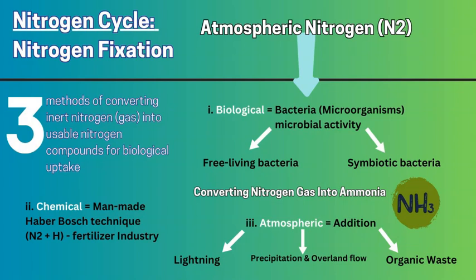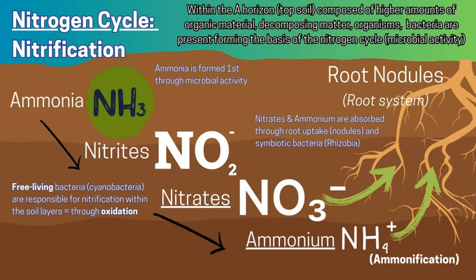There is also a natural, rapid addition of nitrogen through lightning — specifically cloud-to-ground lightning. Precipitation and overland flow take nitrogen from the A horizon and wash it to other areas via gravity. And organic waste — human and animal — adds extra nitrogen. So there are three main ways nitrogen is added: biologically through bacteria, chemically through man-made methods, and atmospherically through lightning.